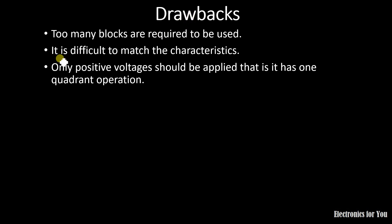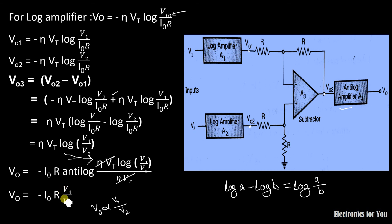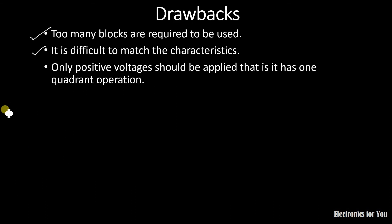There are some drawbacks of this circuit. First, we are using too many blocks — a log amplifier, an antilog amplifier, and a difference amplifier — which is a drawback. Second, it is difficult to match the characteristics: the diode parameters η·Vt and I0 must be the same across all blocks. Third, only positive voltages should be applied; changing the sign of V1 or V2 will break the divider operation. This means it has only one-quadrant operation, the positive-positive first quadrant.